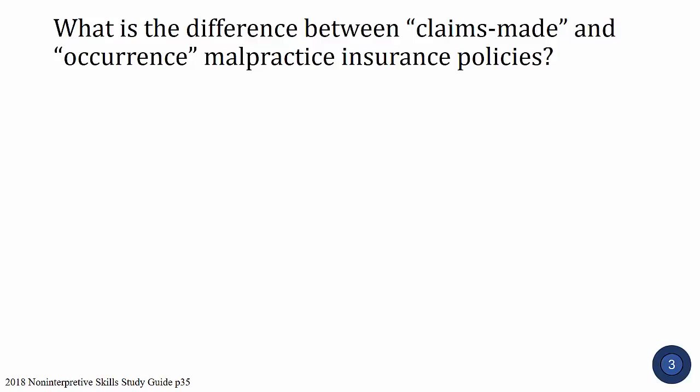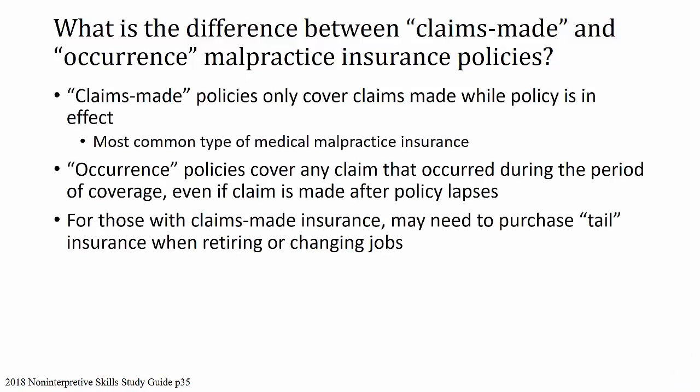What is the difference between claims-made and occurrence malpractice insurance policies? Claims-made policies only cover claims while the policy is in effect — this is the most common type of medical malpractice insurance. Occurrence policies cover any claim that occurred during the period of coverage, even if the claim is made after the policy lapses. For those with claims-made insurance, they may need to purchase so-called tail insurance when retiring or changing jobs, to effectively turn it into occurrence insurance.